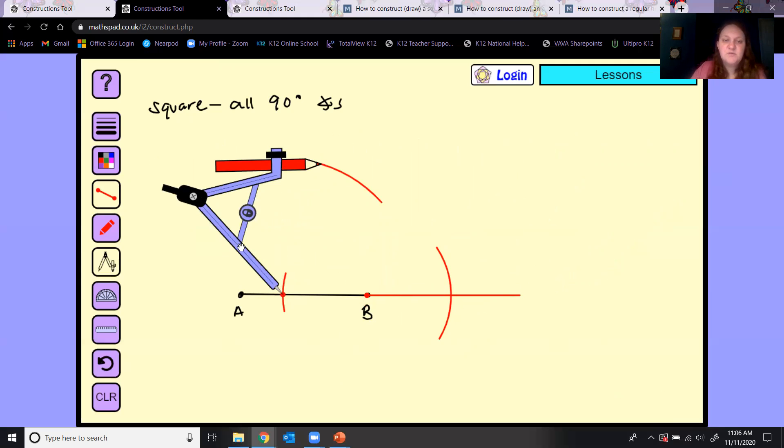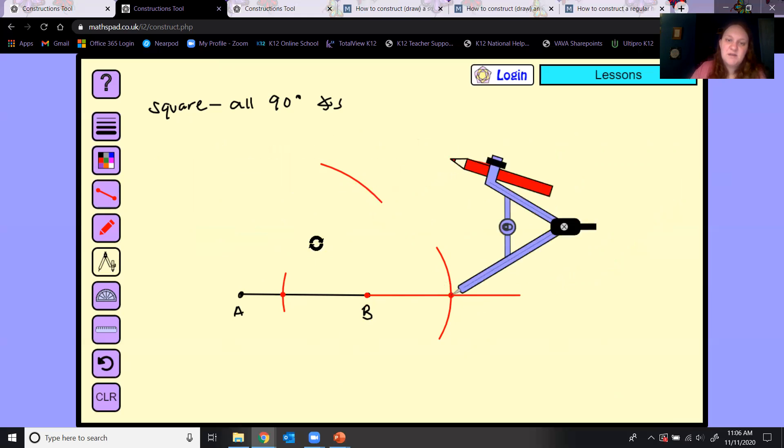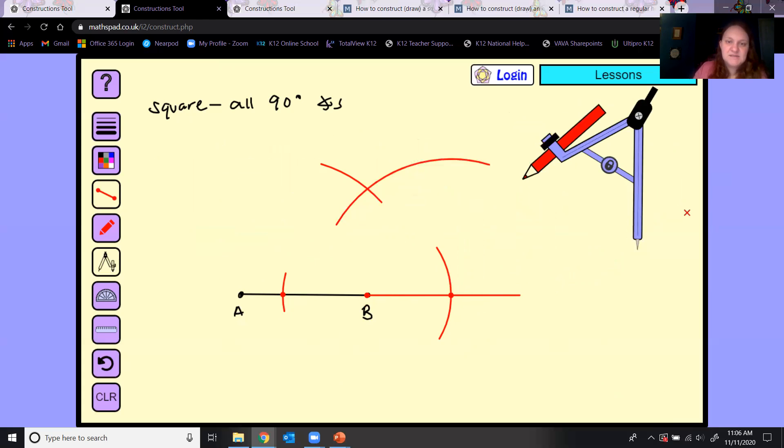Put my point on the other intersection and make another arc. Now what I've done is this point up here connected to B will be a perpendicular line. Remember perpendicular means they make 90 degree angle. So I can go ahead and label this 90 degrees. Now I know this is 90 degrees and this is going to be the length of one side.